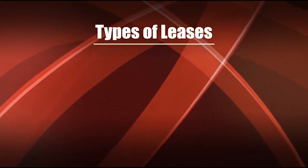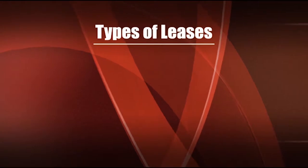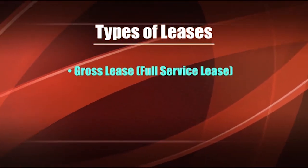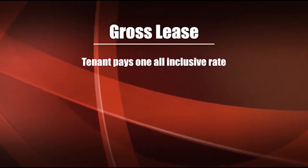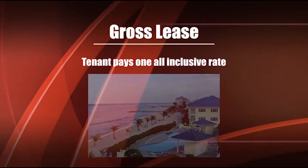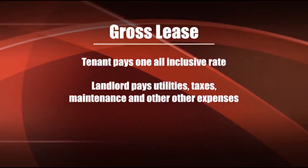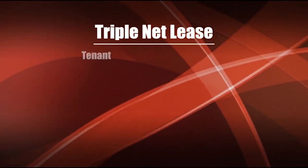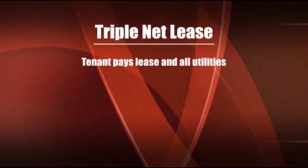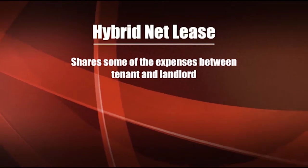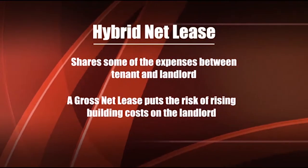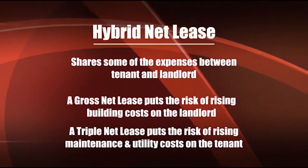Let's discuss the lease types of office space. Although rent for office space can be charged in many ways, the most common types include a gross lease — also known as a full service lease — a hybrid net lease, or a triple net lease. Under the terms of a gross lease, the tenant pays one all-inclusive rate to the owner, almost like staying at an all-inclusive resort: the owner pays the utilities, taxes, maintenance, and other expenses. A triple net lease, on the other hand, has the tenant paying a rental fee to the landlord plus all utilities, plus a percentage of the building's maintenance, taxes, and insurance in a separate CAM fee. A hybrid net lease shares some of the expense between the tenant and landlord. A gross lease puts the risk of rising building costs on the landlord, where a triple net lease puts the risk of rising maintenance and utility costs on the tenant.